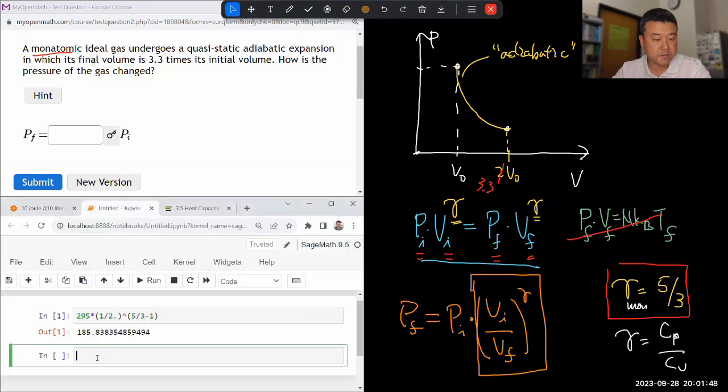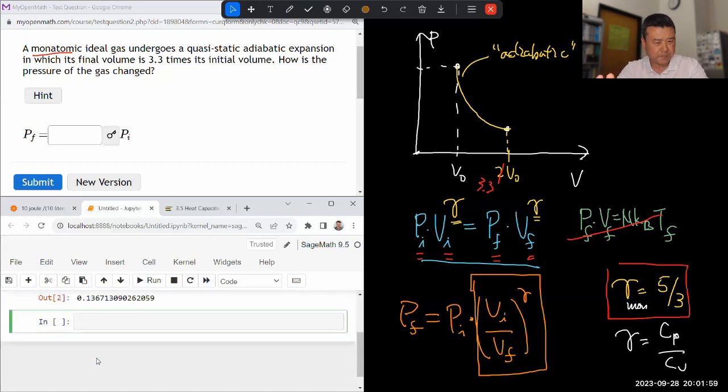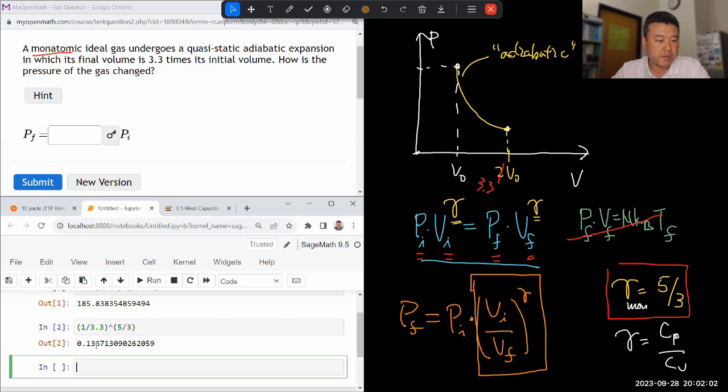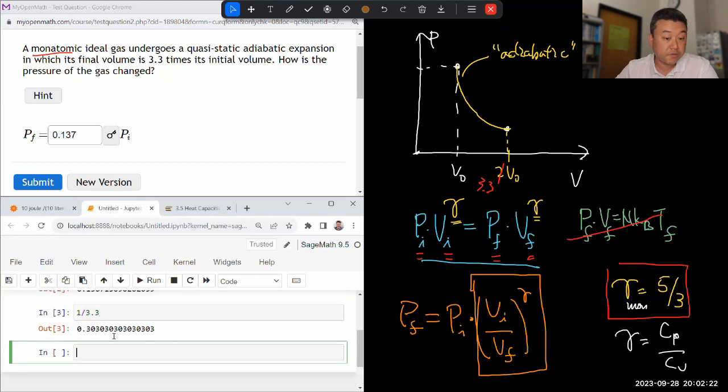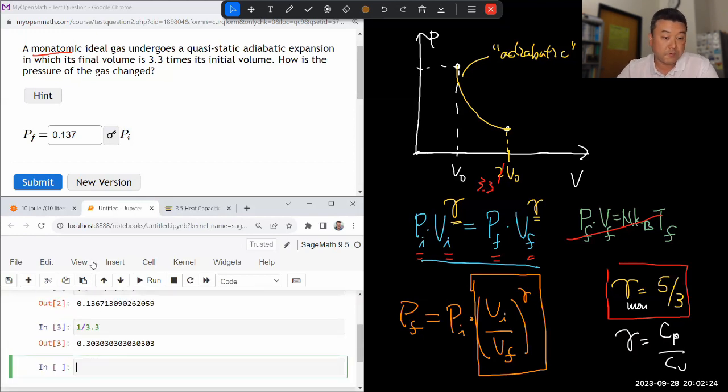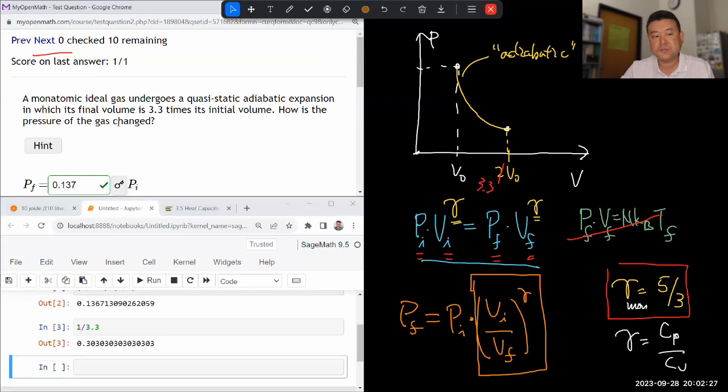So I think I just need to work out this to get the numerical factor that'll go in here. It'll be a unitless number. So I'm doing it in SageMath. V-I over V-F, that's going to be one divided by 3.3 raised to power gamma, five divided by three. And I think it'll do decimal approximation, 0.137. And if you compare this to what it would be for an isothermal expansion, you'll see that this is less. Because in adiabatic expansion, the temperature also changes. It decreases. So in an isothermal expansion, it would have been 0.303. So this is less than half as much.